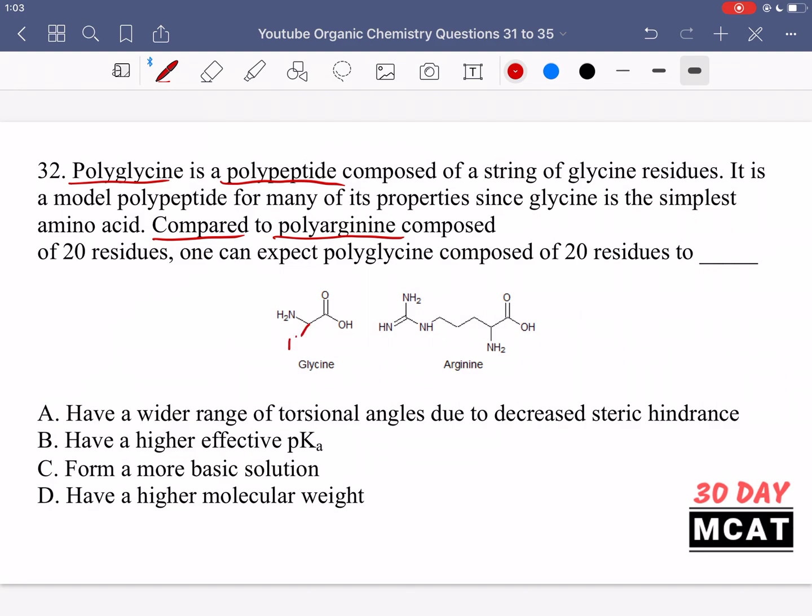For glycine, the R group is simply a hydrogen molecule, whereas for arginine it's this entire group with a bunch of carbons and that guanine group at the end which is those three nitrogens. Because of the three nitrogens, arginine is known to be a basic amino acid, which means it has a high pKa.